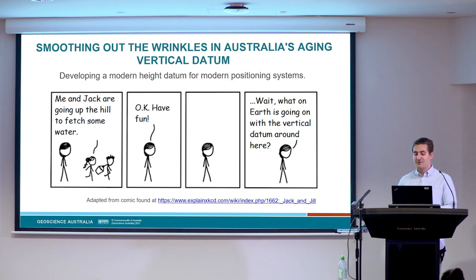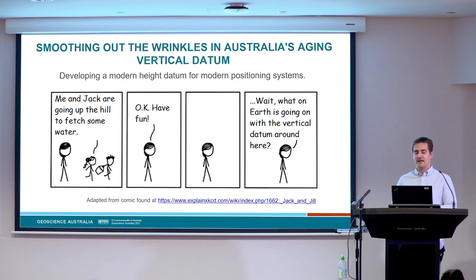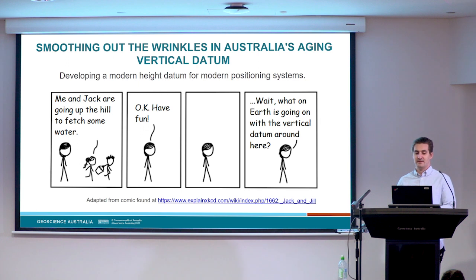The current official vertical datum in use in Australia is the Australian Height Datum, or AHD, and it's 50 years old this year. It's stood the test of time well, but it has some bumps and wrinkles, and it was never intended to be compatible with modern positioning technology like GPS. Today I'll be talking about what we've been doing to develop a new alternative vertical datum, which is a bit more accurate than AHD and a lot more compatible with GPS.